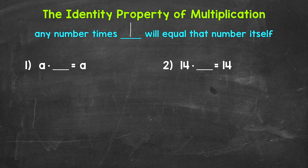Let's jump into number one, where we have a times what equals a? Well, a times one equals a. 'a' just represents any number. We can plug in any number for a and the identity property of multiplication will apply — a times one equals a, any number times one will equal itself.